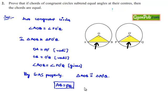Thus, the chords which subtend equal angles at the center are of equal lengths. This is proved. Thank you.